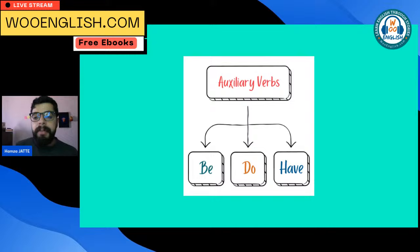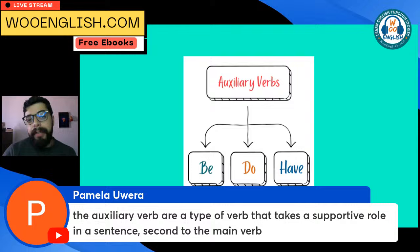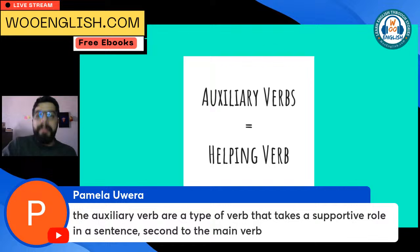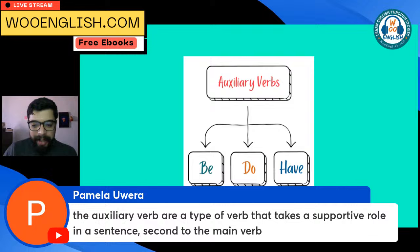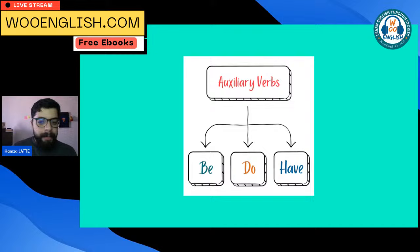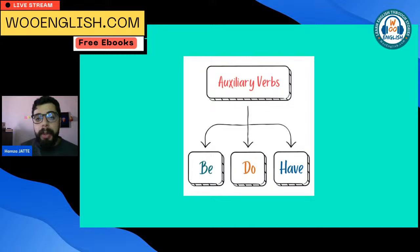Hamza gives us an example: 'I have just eaten' — for the verb to have you will find more details in the present perfect sessions. So we have three main auxiliary verbs: be, do, and have. Let's go through them one by one and discover what each one is about.